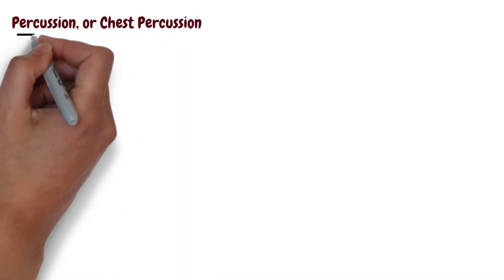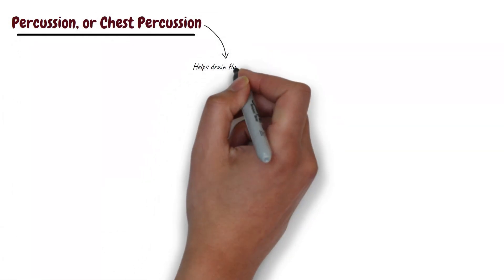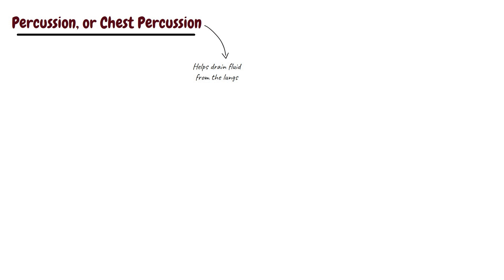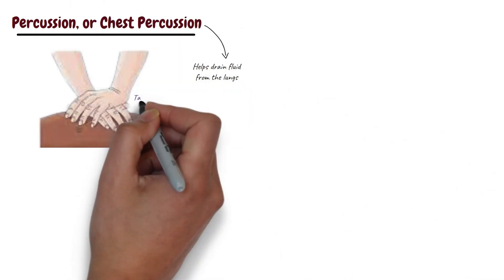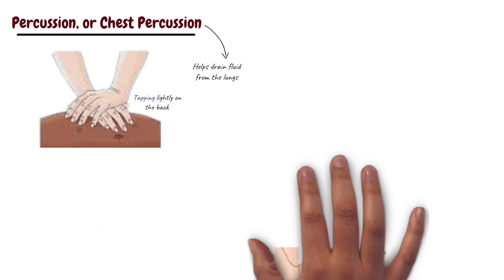The sixth way that you can clean your lungs is by practicing percussion. Percussion or chest percussion is a technique that can help drain fluid from the lungs. It involves having you lie down with your head lowered and tapping lightly on your back, working from top to bottom.